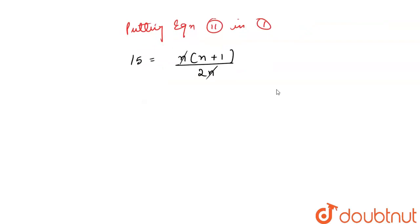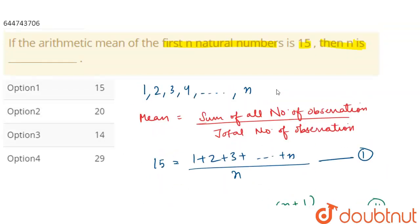n and n will get cancelled, and this will be 30. So n plus 1 equals 30. By this we get n equals 30 minus 1, that will be 29. So we get value of n is 29. Now if we check our options, option 4 is correct.